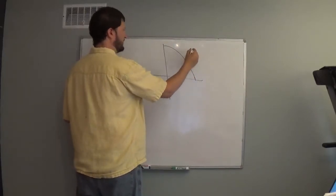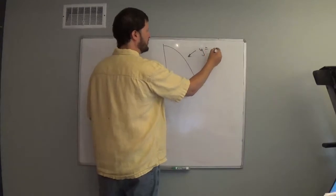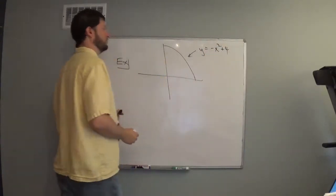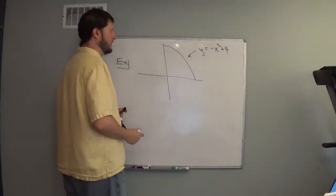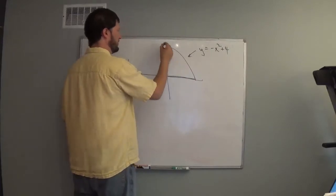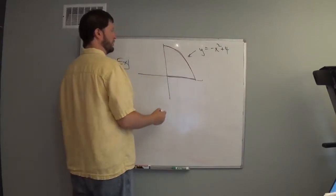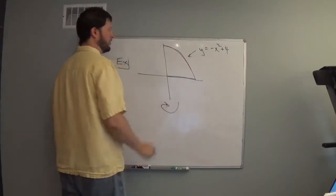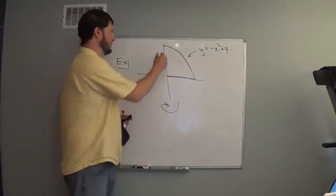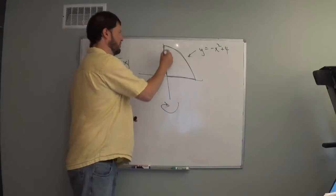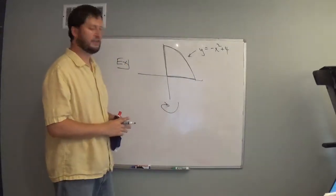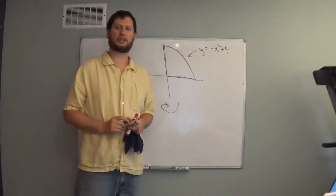This is going to be y equals negative x squared plus 4, a parabola that opens down. We're going to take this region and rotate it around the y-axis, and we're asked to set up an integral that gives the volume.